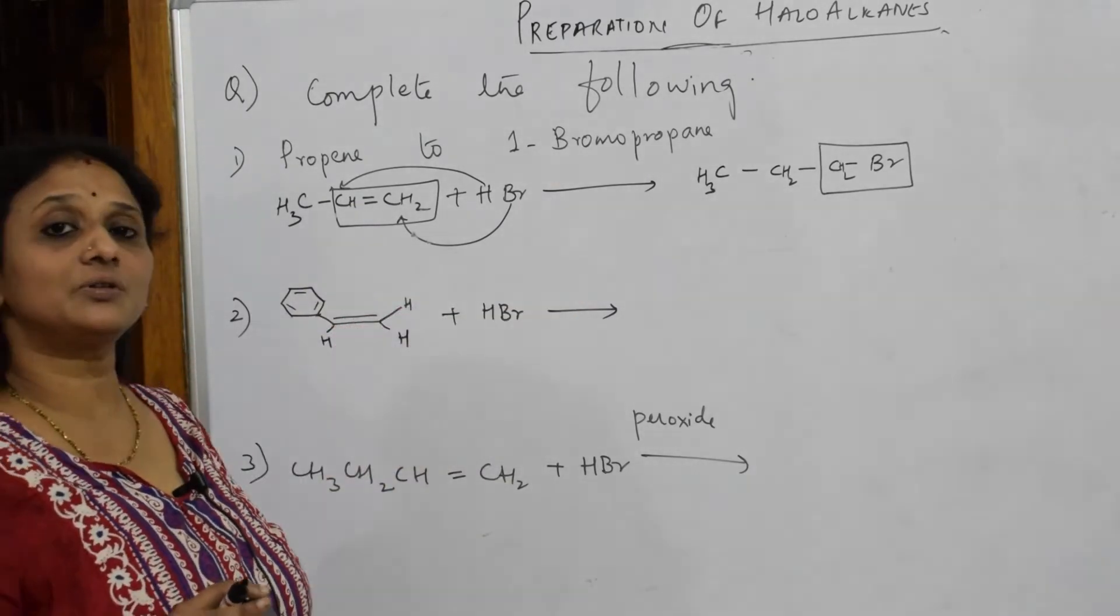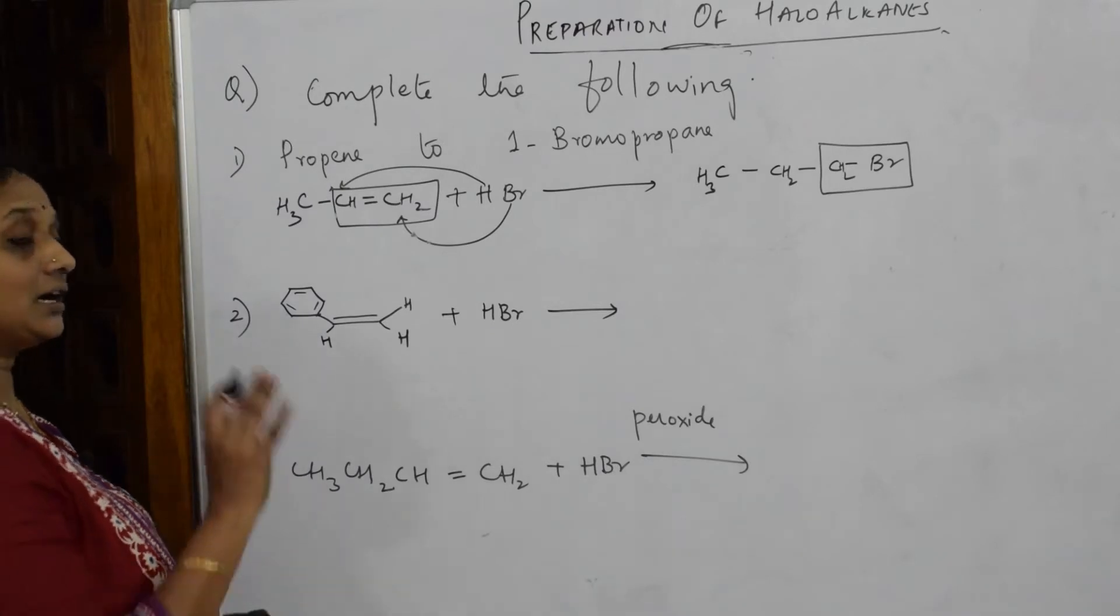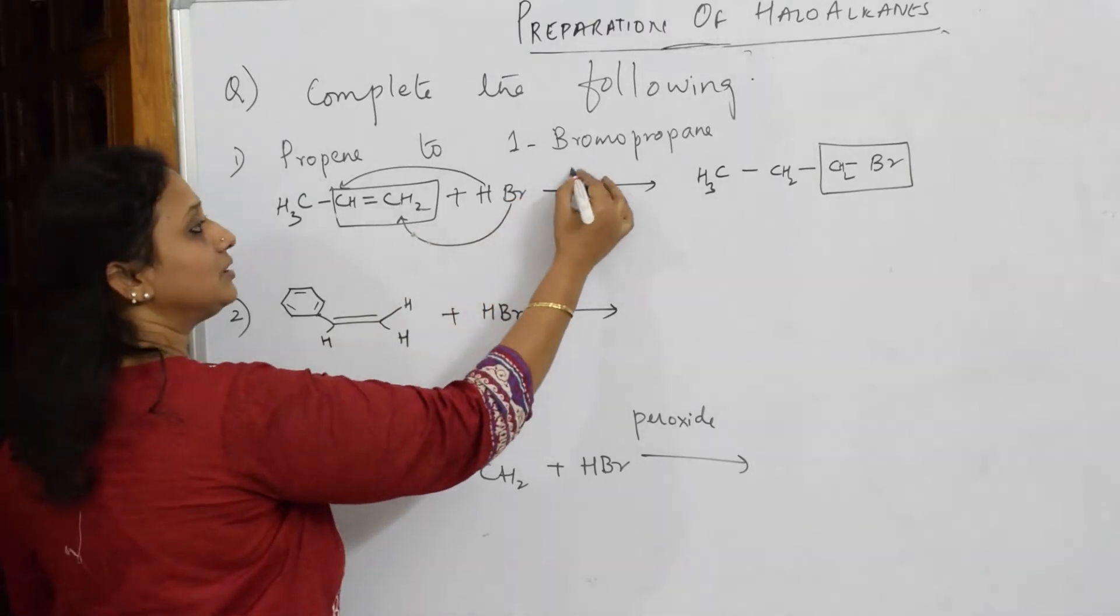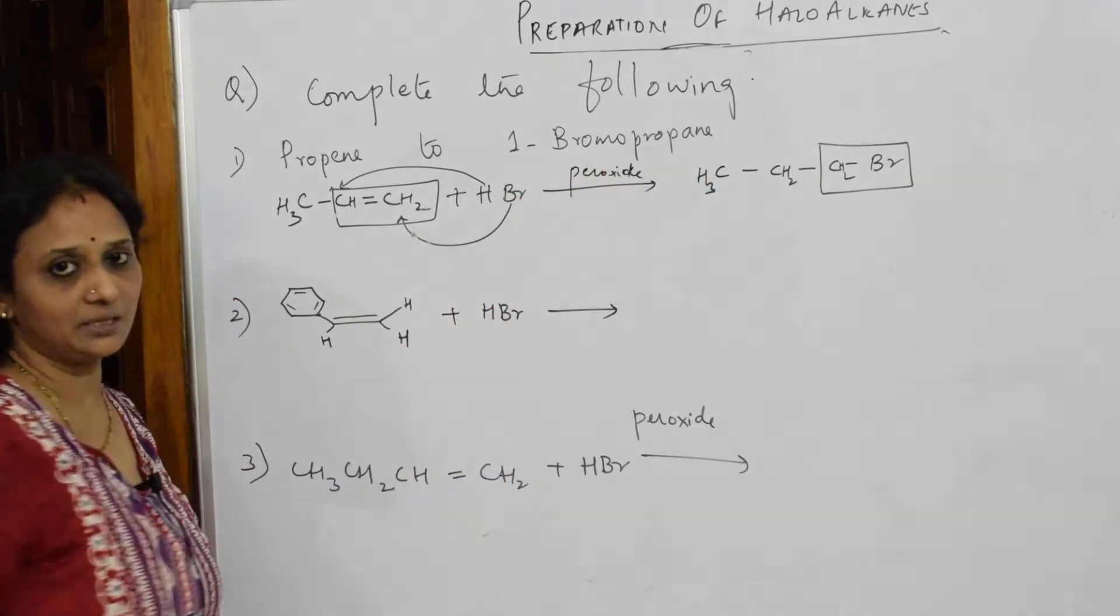They have not mentioned any peroxide, but it has added H and Br. So what is followed here? What should also be there in the reaction? Unsymmetrical in the reverse order, there should be a peroxide here for preparing. That is how you get the product.